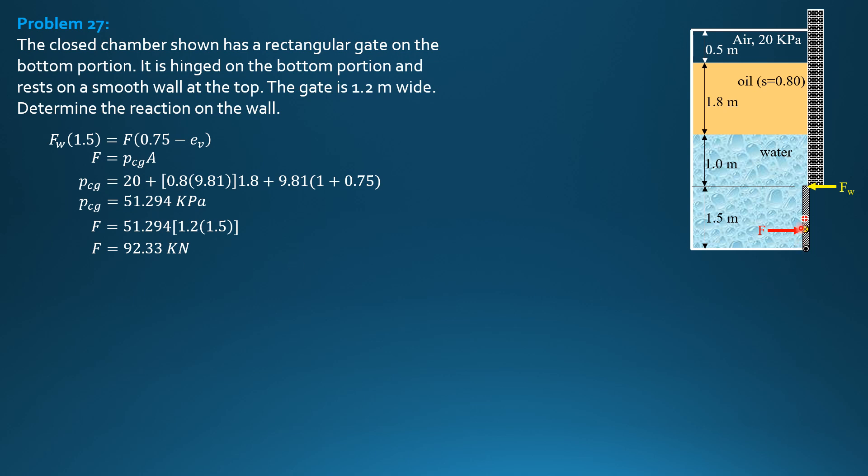Next is we solve for E sub V, which is height of rectangle 1.5 square, height of rectangle square over 12 barred H. But we don't have barred H. Barred H is computed from pressure at centroid equals specific weight of liquid in contact with the gate, which is water, times barred H. Of course. So 51 pressure at centroid is gamma of liquid in contact with the gate times barred H. So 51.294 equals 9.81 times barred H. So barred H is 5.229 meters.